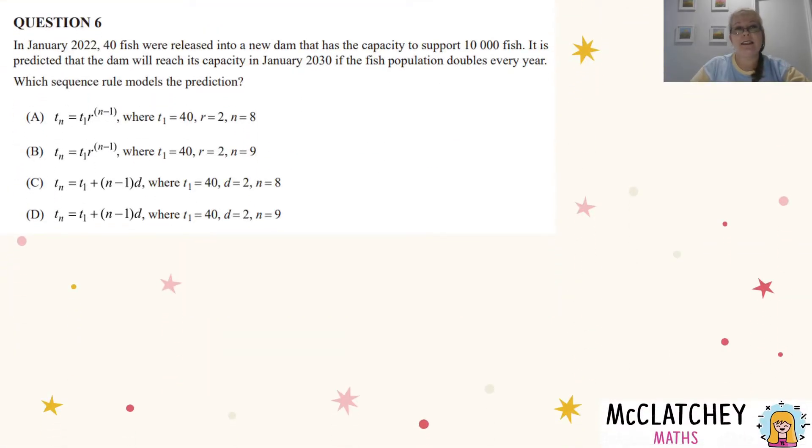Question six. In January 2022, 40 fish were released into a new dam that has the capacity to support 10,000 fish. It is predicted that the dam will reach its capacity in January 2030 if the fish population doubles every year. Which sequence rule models the prediction?